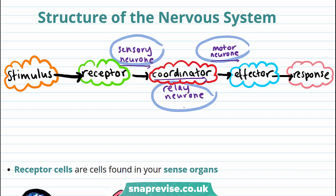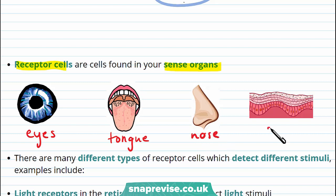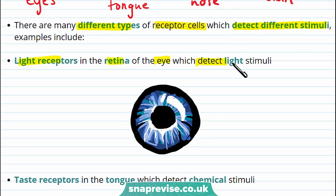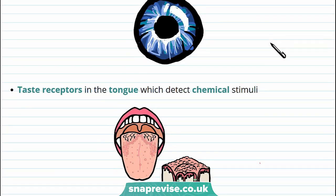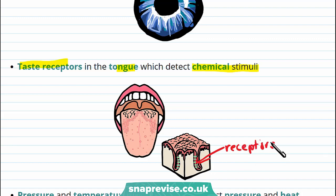Receptors detect stimuli and they're found in the sense organs. These sense organs include the eyes, the tongue, the nose, and the skin. All these sense organs contain different types of receptor cells which detect different stimuli. The light receptors in the retina of the eye detect light stimuli. There are also taste receptors in the tongue which detect chemical stimuli — this is what allows you to taste something that's sweet or salty, and the green dots here represent the receptors in your tongue.